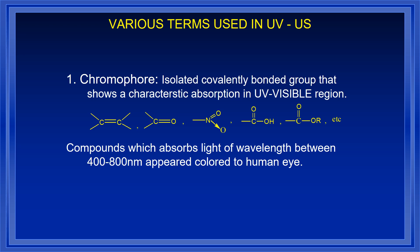These groups will give you the pi bonding to pi anti-bonding transition. Again this will give you the pi bonding to pi anti-bonding. Similarly this double bond — lone pairs would be there — all these things are there.